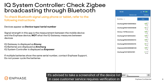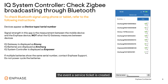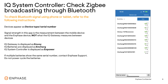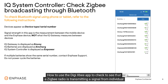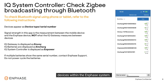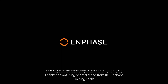It's advised to take a screenshot of the device list in case customer service requires verification if a service ticket is created. And there you have it — how to use the DIGI XB app to check that a Zigbee radio is transmitting a signal from individual devices within the Enphase system. Thanks for watching another video from the Enphase training team.